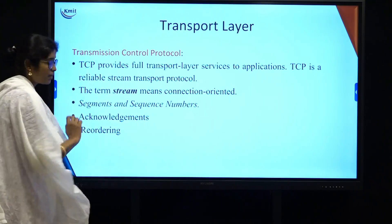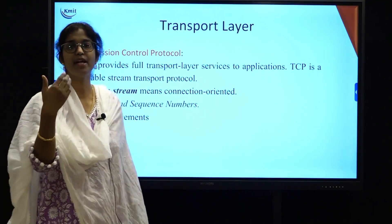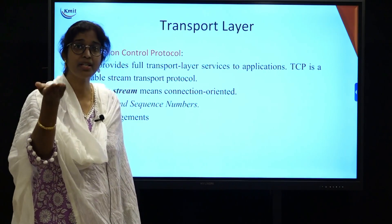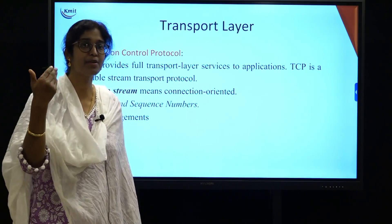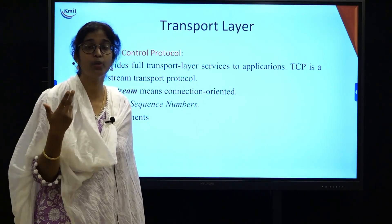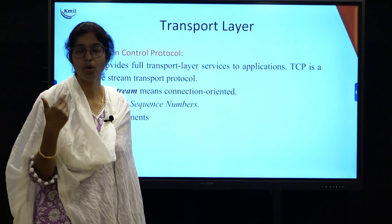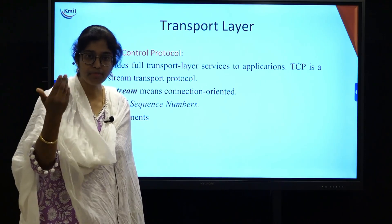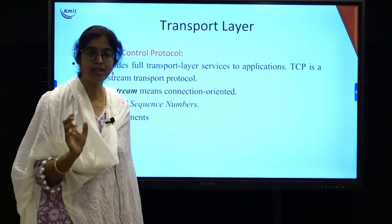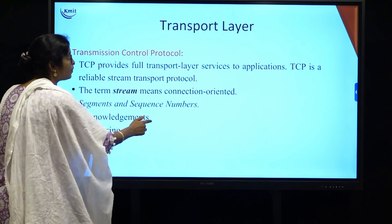TCP also uses acknowledgements. If I have sent a segment to you, you acknowledge its receipt back to me — this is flow control. Once you have acknowledged receipt, I know I can send more data. All of this — error control, sequencing, acknowledgements, and flow control — is handled by TCP.